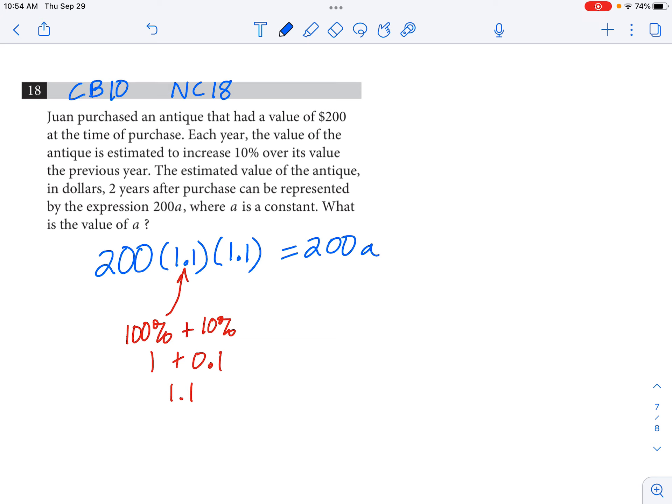Oh, okay, I think I know what's going on here. Looks like we don't really have to worry too much about the 200s, because that's on either side of the equation. a is going to be whatever 1.1 times 1.1 is.